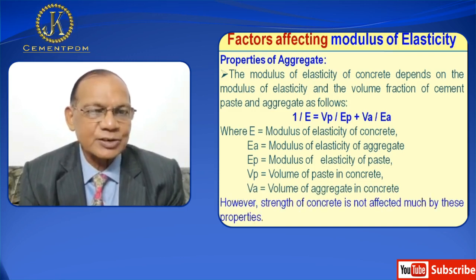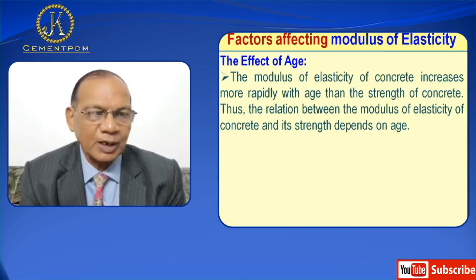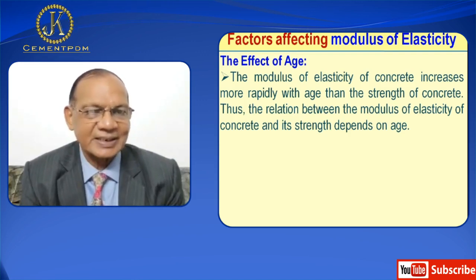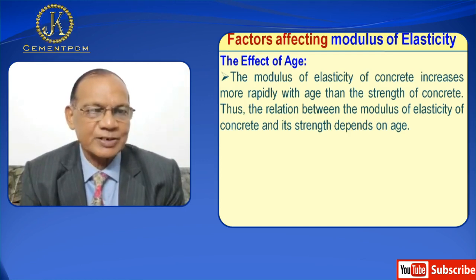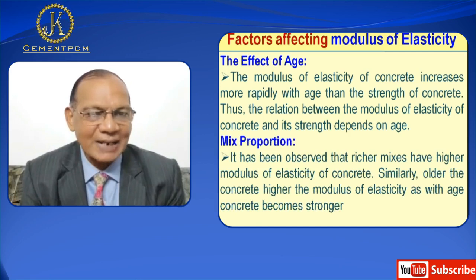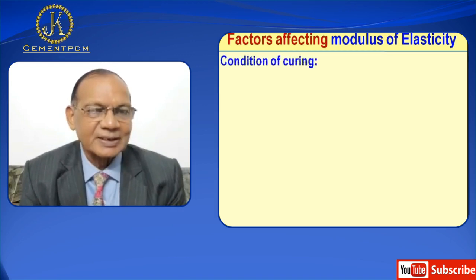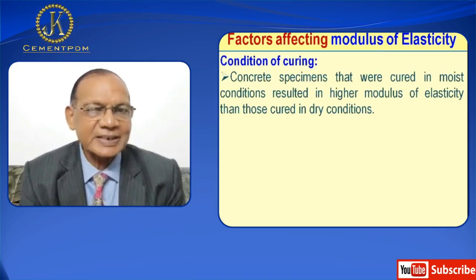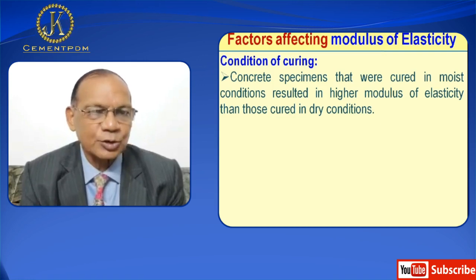However, the strength of concrete is not much affected by this property. Factor four is the effect of age — the modulus of elasticity of concrete increases more rapidly with age than the strength of concrete, so the relation between modulus and strength depends on age. Factor five is mix proportion — richer mixes have higher modulus of elasticity, and older concrete has higher modulus as it becomes stronger with age. Factor six is condition of curing — concrete specimens cured in wet conditions result in higher modulus of elasticity than those cured in dry conditions.